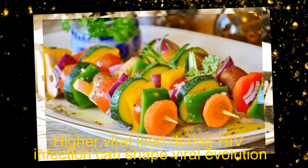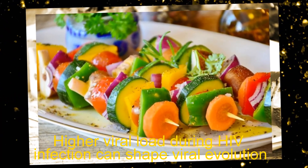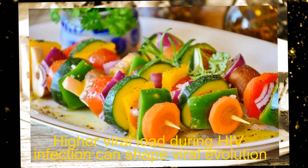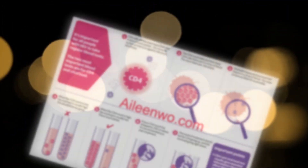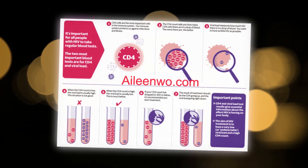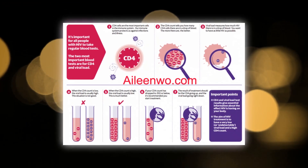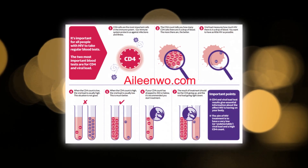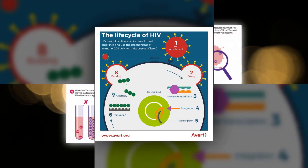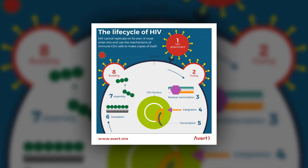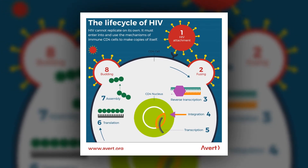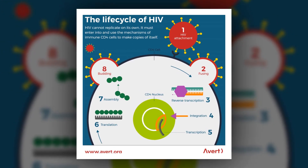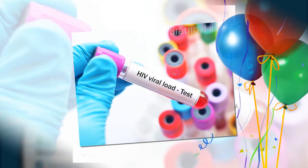Higher viral load during HIV infection can shape viral evolution. A new paper in Molecular Biology and Evolution finds that HIV populations in people with higher viral loads also have higher rates of viral recombination. In effect, the more HIV in the blood, the easier it is for the virus to diversify.